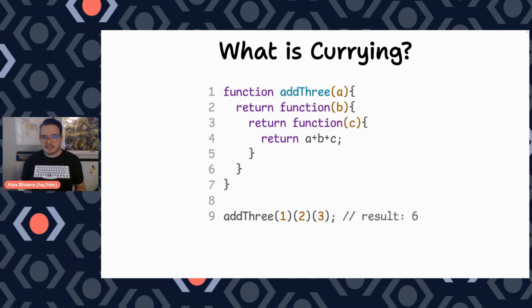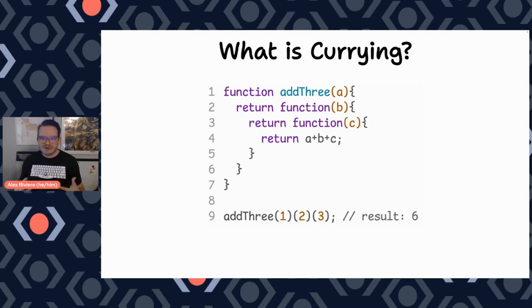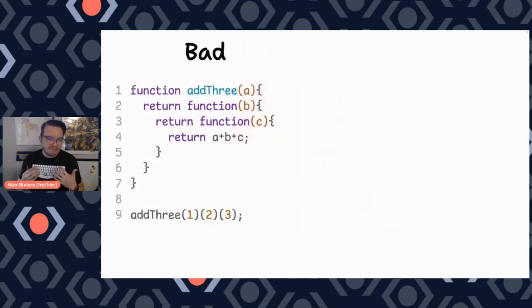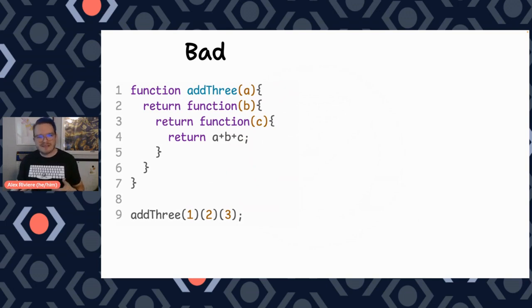Now, most tutorials that I've seen online start with this example. Maybe the way that it's written has changed a little bit, and with newer arrow functions, it might be a little bit more condensed. But ultimately, it boils down to this example. And this is a terrible example. It's a good place to give you a simplified view, but if you stop there, it's not useful. If I saw this in a code review, I would have to call you and make sure you're okay, because this is not the way that currying functions should be used.